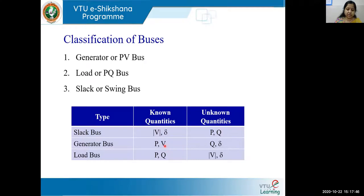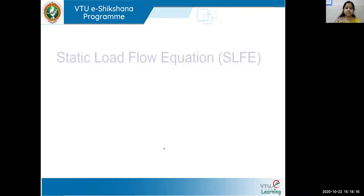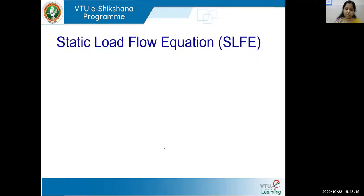One more thing given in the generator bus data is the generator limits — that is, the Q limits. Apart from P and the magnitude of V, the generator bus will also give you Q-minimum and Q-maximum. With this basic understanding, let us look at the static load flow equation used for load flow analysis.